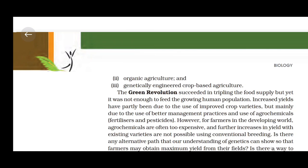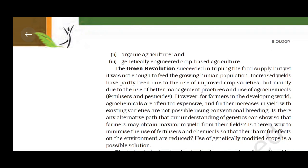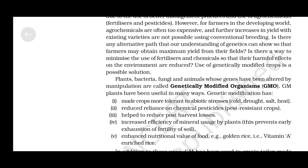Is there an alternative path that our understanding of genetics can offer, so that farmers may obtain maximum yield from their fields and minimize the use of fertilizers and chemicals to reduce their harmful effects on the environment? Use of genetically modified crops is a possible solution. Plants, bacteria, fungi and animals whose genes have been altered by manipulation are called genetically modified organisms, or GMOs.